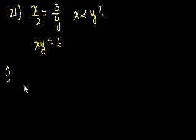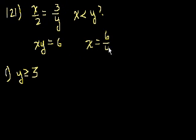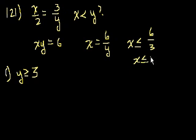Statement 1 says y is greater than or equal to 3. If y is greater than or equal to 3, so what does that mean? x is equal to 6 divided by y, right? If it's 3, that's the largest that x can be. If y is any larger number, then x will only be smaller. So x will be less than or equal to 6 over 3, or x will be less than or equal to 2. And I want you to understand why I said that.